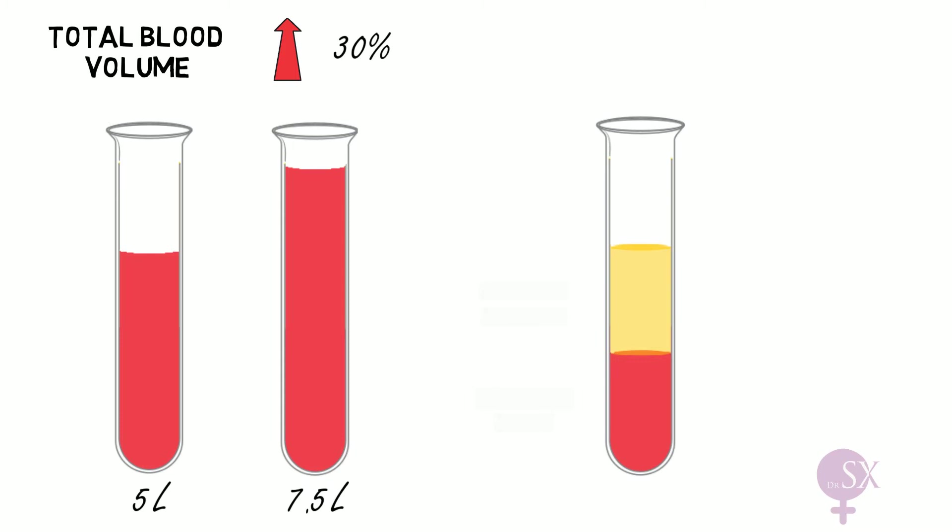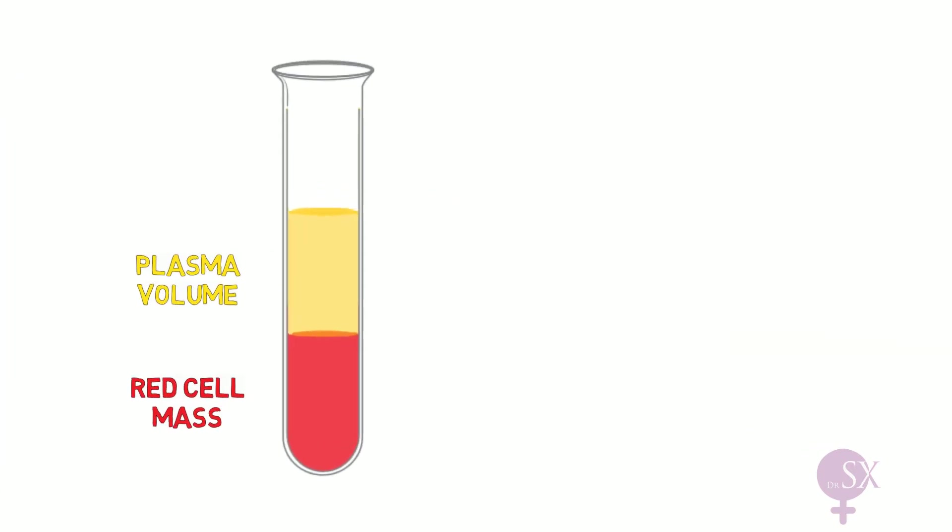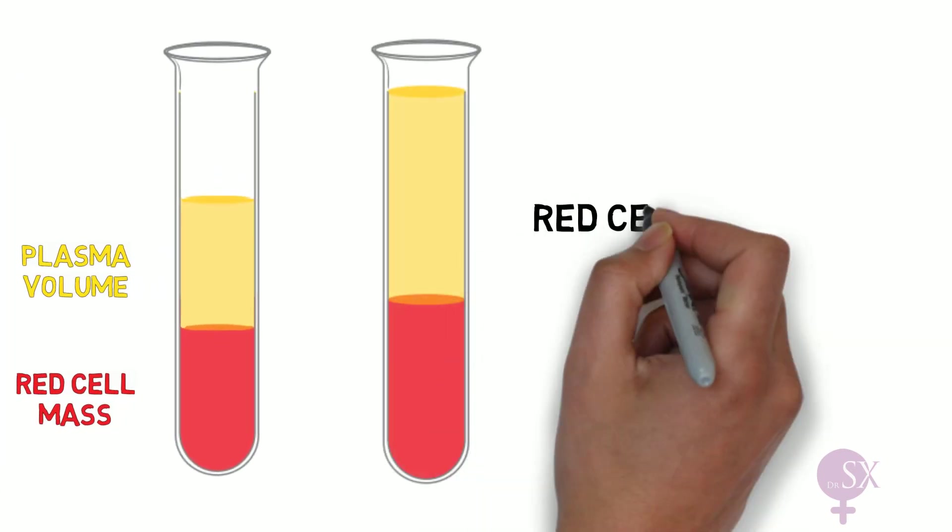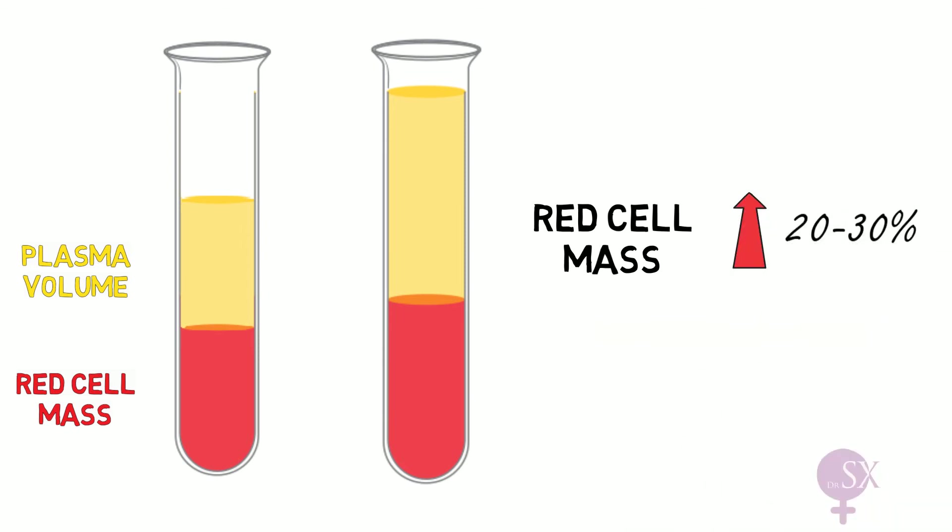Now the blood volume is actually composed of the plasma volume and the red cell mass which constitutes the red blood cells. In pregnancy there is a minor increase in the red cell mass by 20 to 30% but a greater increase in the plasma volume by around 45%. Therefore there is increased dilution of the red blood cells resulting in a lower hematocrit.